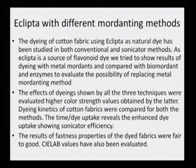The results of fastness properties of the dyed fabrics were fair to good. C-lab values were also evaluated, because unless we evaluate them it will not be clear what kind of shades are obtained — you may think it is giving green, I may think it is giving some other shade of light yellowish green. That discrepancy can be completely removed with a numeric color naming system, which is done by the C-lab values.